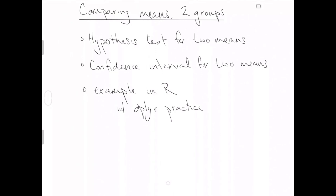This video covers comparing means specifically for two groups. This is very much like comparing proportions for two groups. For the most part, the only difference is replacing p's for proportions with mu's for means, and much of the same thing we talked about before is going to carry forward. I'm going to try to move a little bit quicker through this to give us a shorter video this week. We'll do hypothesis tests and confidence intervals, then an example in R, and practice with dplyr, because dplyr is an incredibly useful tool in R and statistics.